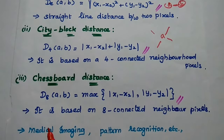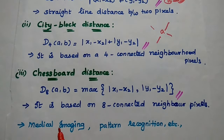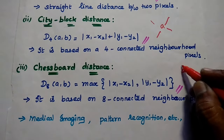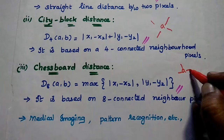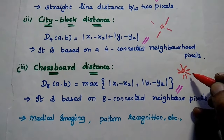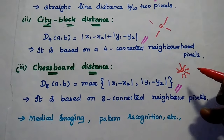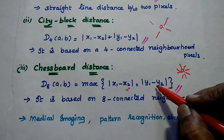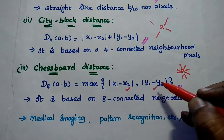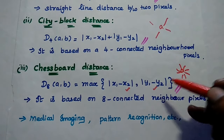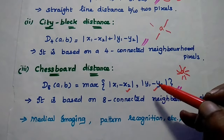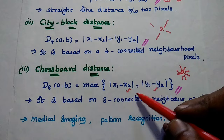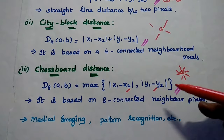The third one is chessboard distance. Here we consider all eight neighboring pixels. In this chessboard method we take the modulus of the difference between the two pixel coordinates and from these values we consider only the maximum value.